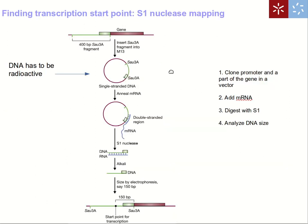The S1 nuclease mapping technique can be modified to find the transcription start point for a gene. We clone part of the beginning of the gene — including a little of the coding sequence and a little of the sequence before the gene — into M13. As you may remember, M13 phage produces single-stranded DNA, which is important here. This DNA also needs to be radioactive, so we grow the phages to produce radioactive DNA.